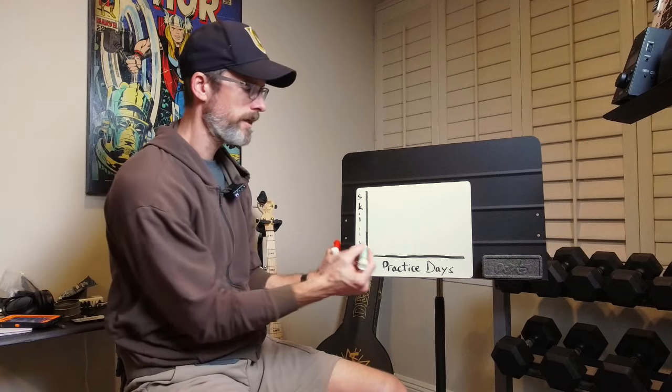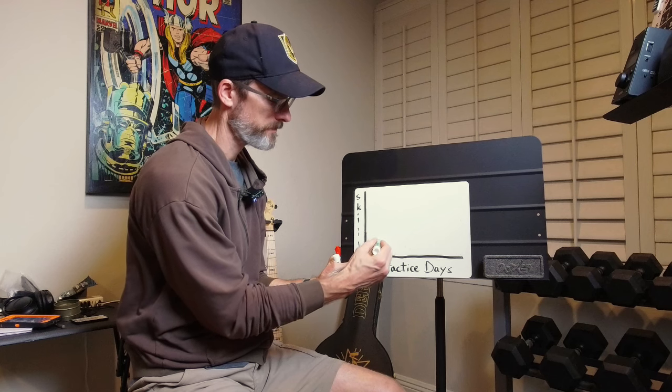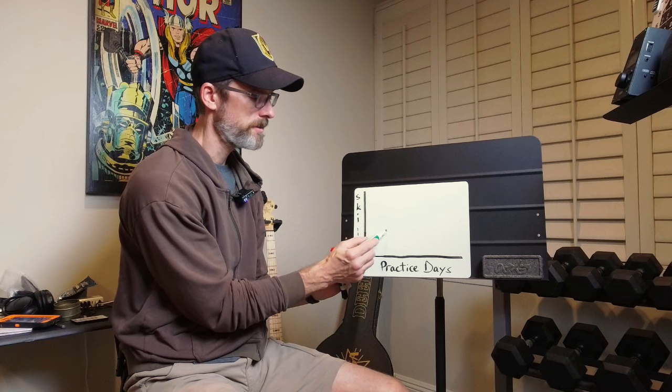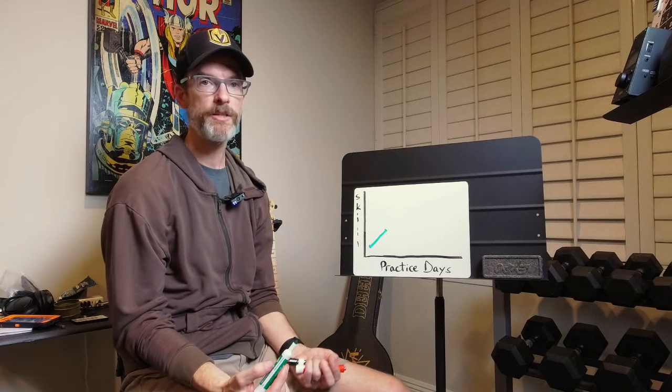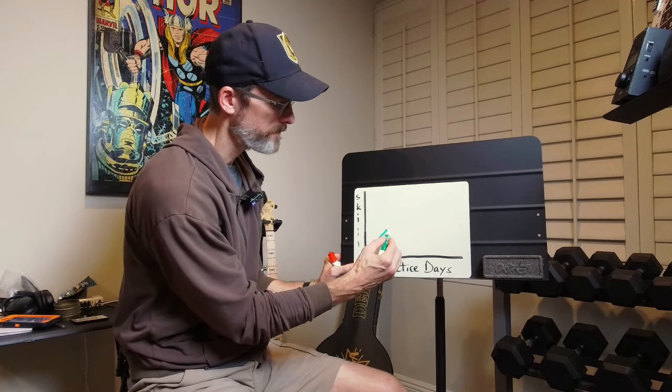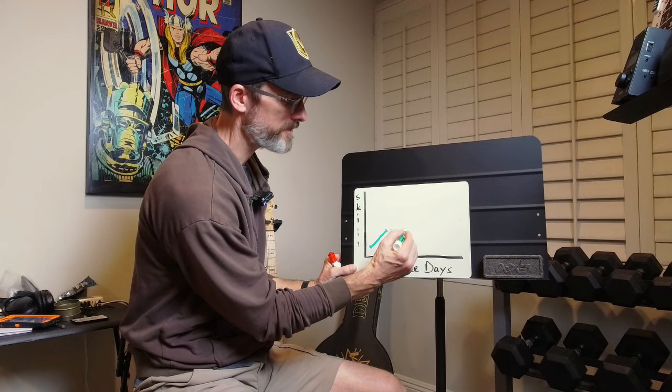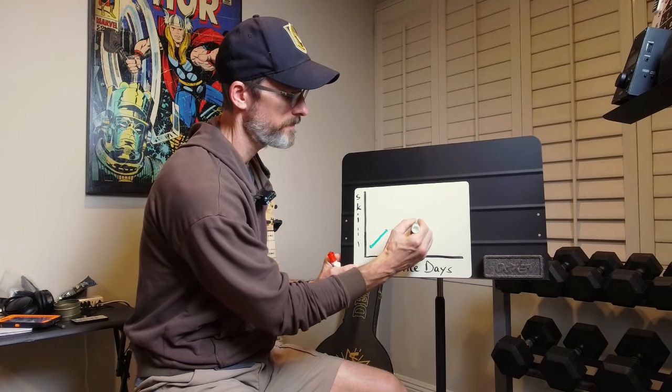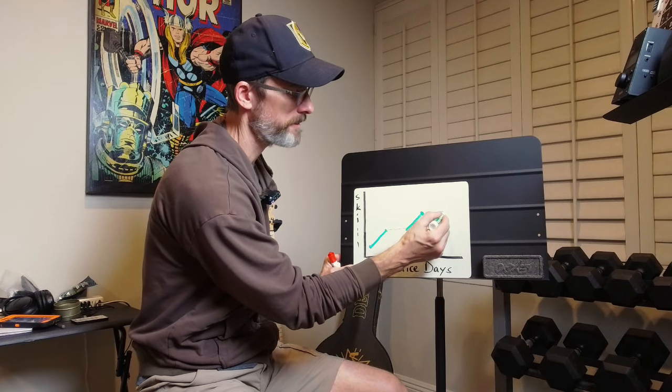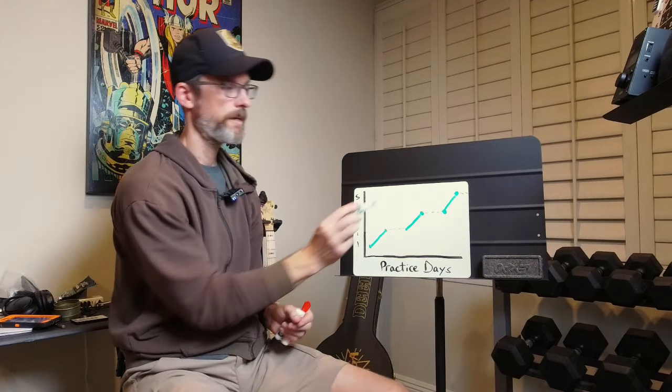So if we imagine we practice and we have a practice session, right? In that practice session, we start at one skill level, we gain some skill during the practice, and then practice is over. Tomorrow we practice again. And the wrong expectation is that we're going to pick up right where we left off with the skill. Practice, stop practice, and on and on. And this is how we build skill from practice. That is wrong. That is not correct.